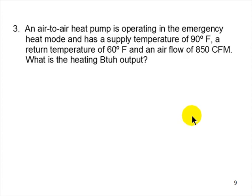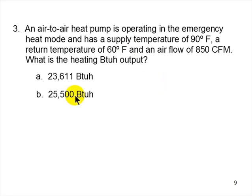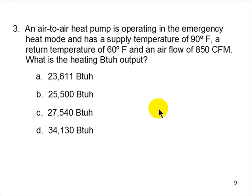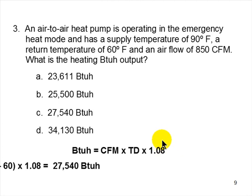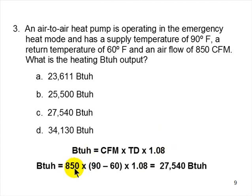Question 3: An air-to-air heat pump is operating in emergency heat mode with a supply temperature of 90°F, return temperature of 60°F, and airflow of 850 CFM. What is the heating BTU output? Use: BTU = CFM × ΔT × 1.08 = 850 × 30 × 1.08 = 27,540 BTU. Answer: 27,540 BTUs.